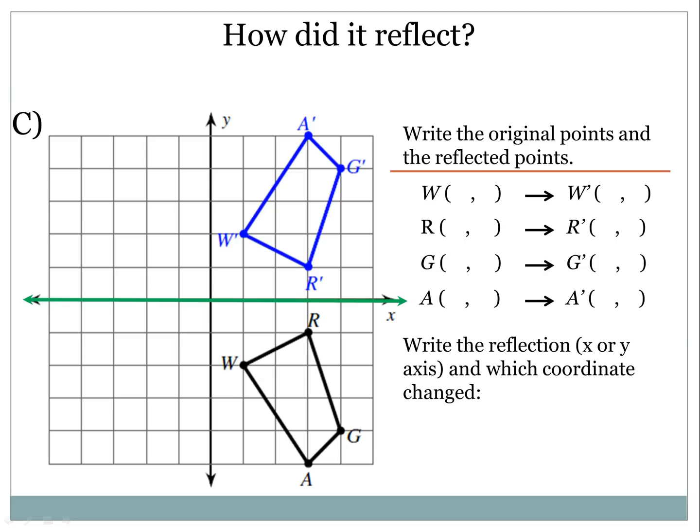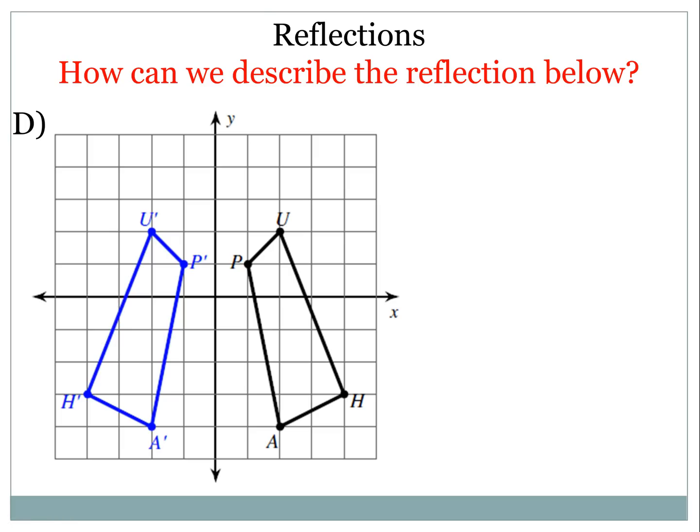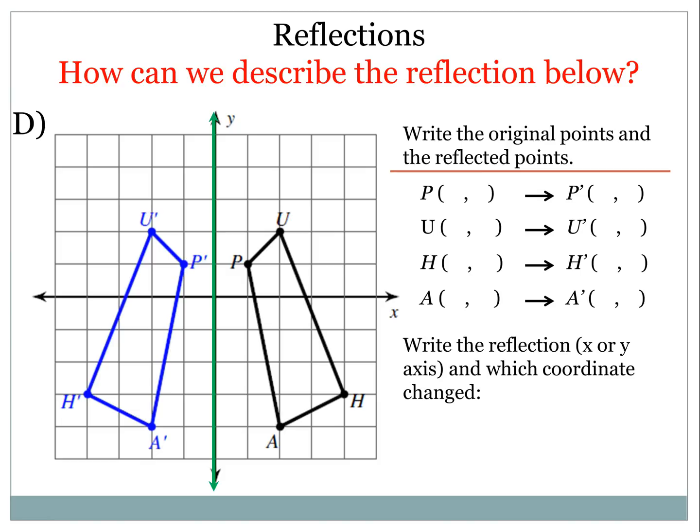And we're back. So moving on to example D, we want to know how we can describe the reflection below. So you might have already been screaming at your screen that it is reflected over the y-axis, which is now blinking in green. And when it reflects over the y-axis, I really want you to do the same thing that we did with example C. Write down the original points and the reflected points, and the axis that was reflected over, and what coordinate changed. Again, I'm not going to have answers. I just want you guys to check with someone next to you, or just to look and review what it means to find each of those coordinate points. And again, the black shape is the original, and the blue shape is the reflected figure.